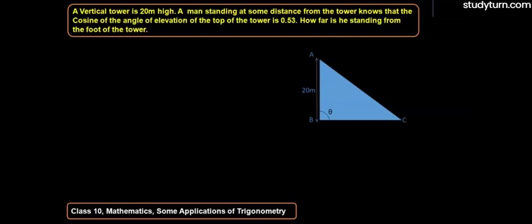A vertical tower is given whose height is 20 meters, and a man is standing at some distance from the tower. He knows that the cosine value of the angle of elevation of the tower is 0.53. We have to find out how far from the foot of the tower he is standing. Let us solve the question.